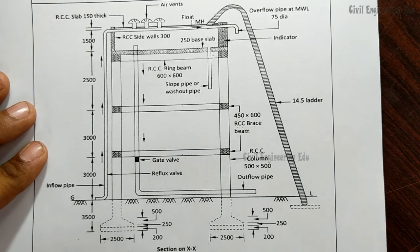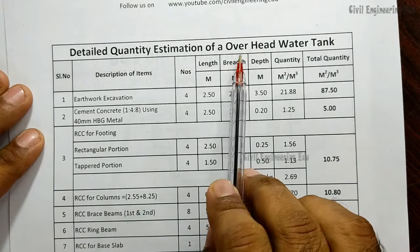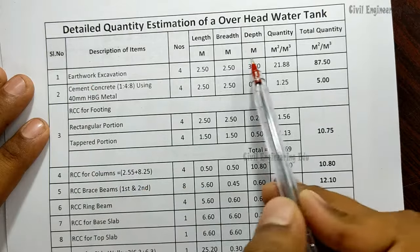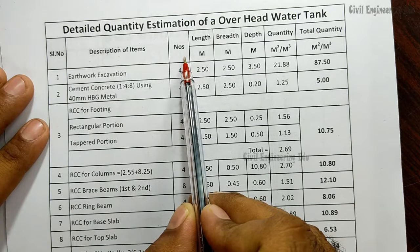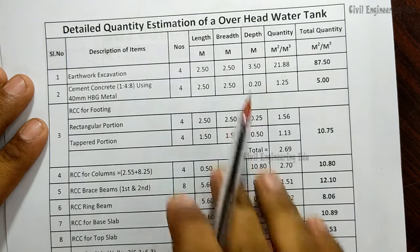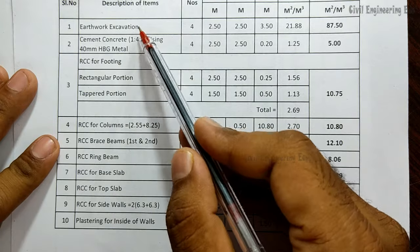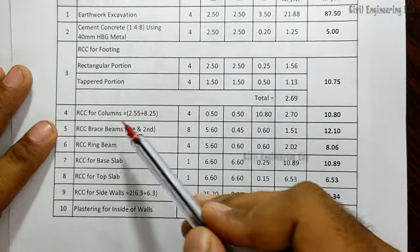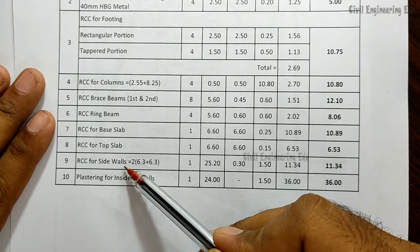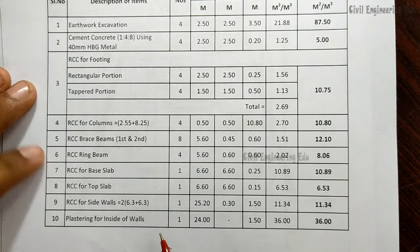Now let's see the calculation part. This is the detailed estimation table for an overhead water tank, consisting of eight columns: serial number, description, numbers, length, breadth, depth, quantity, and total quantity. We have calculated earthwork excavation, PCC, RCC for footing, columns, brace beams, ring beams, base slab, top slab, RCC side walls, and plastering for inside walls.